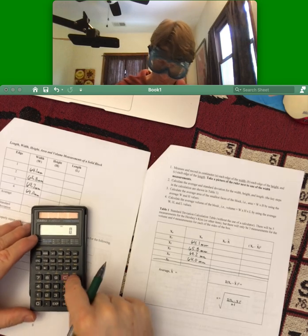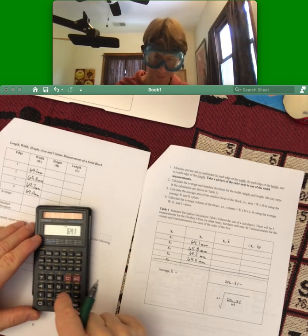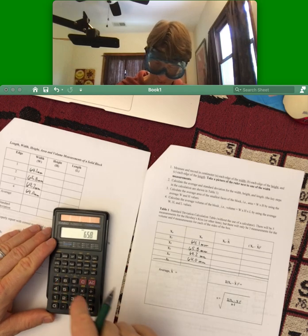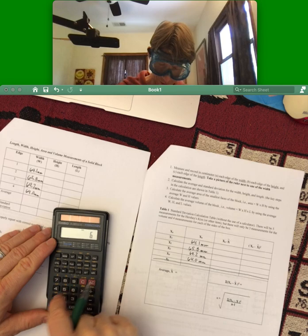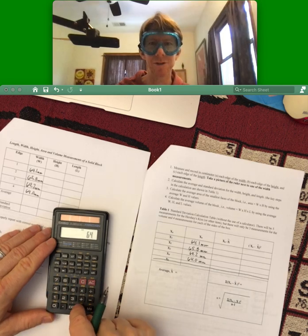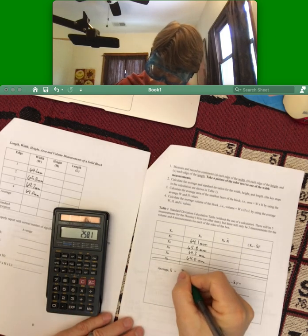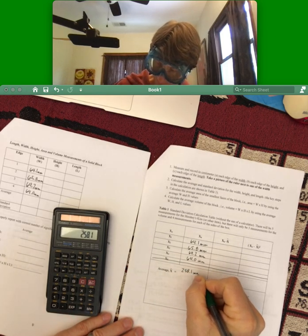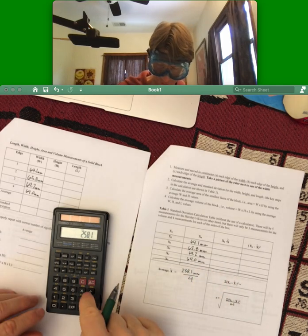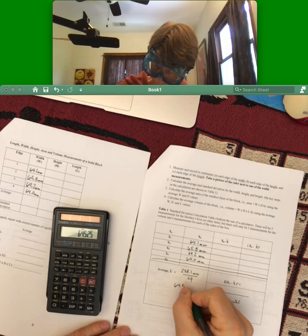Again, longhand: 64.1 plus 65.8 plus 64.2 plus 64.0, which we can just enter 64. I get 258.1, and I'm gonna divide by 4. I get 64.525.